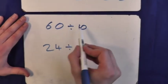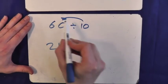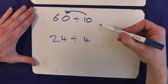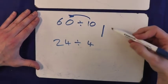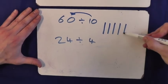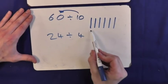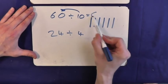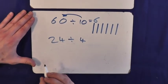How many 10's make 60? So let's do our 10 sticks. 10, 20, 30, 40, 50, 60. That's 6. 60 divided by 10 is 6.